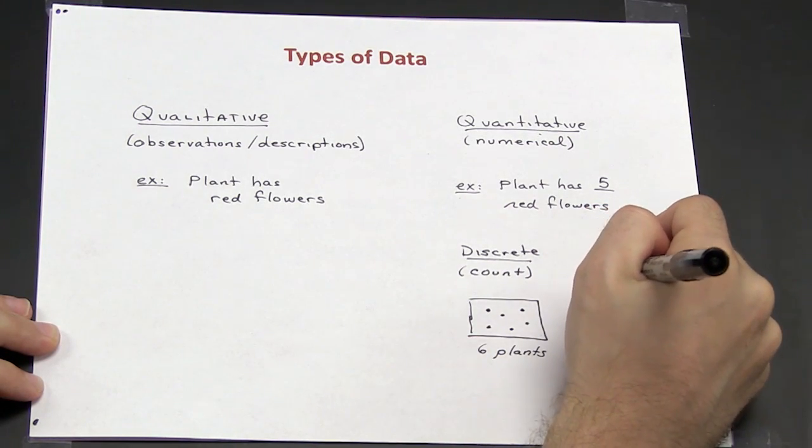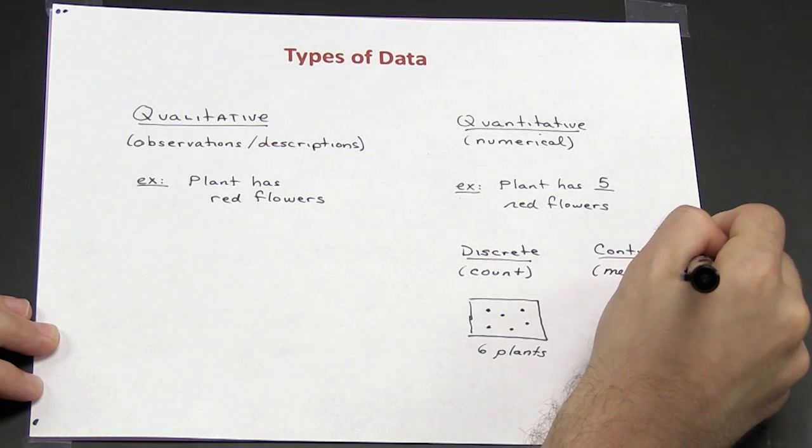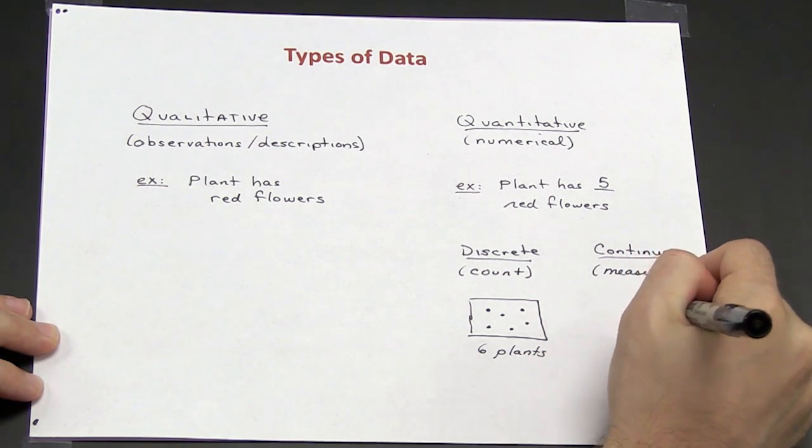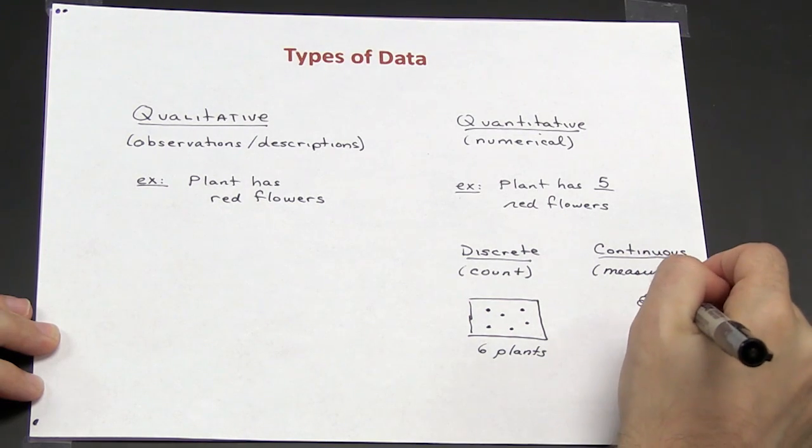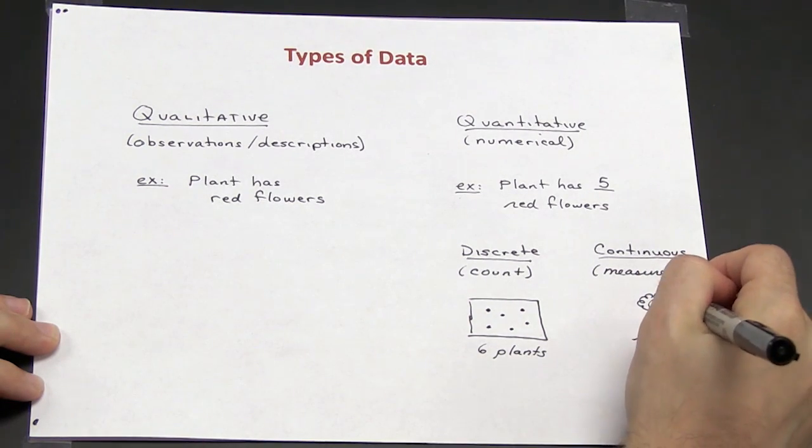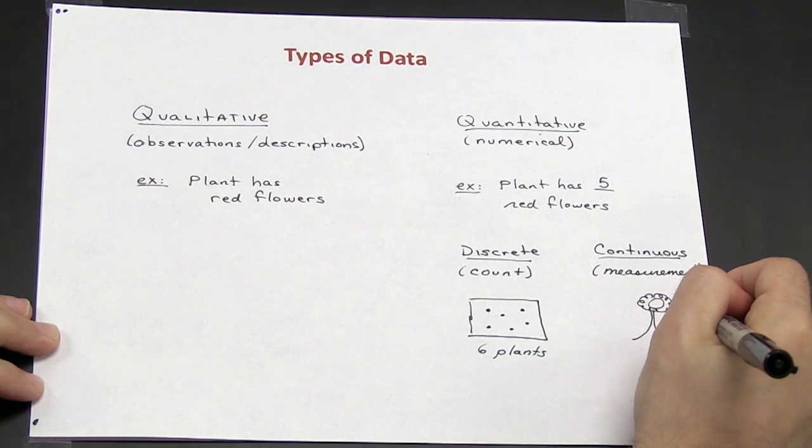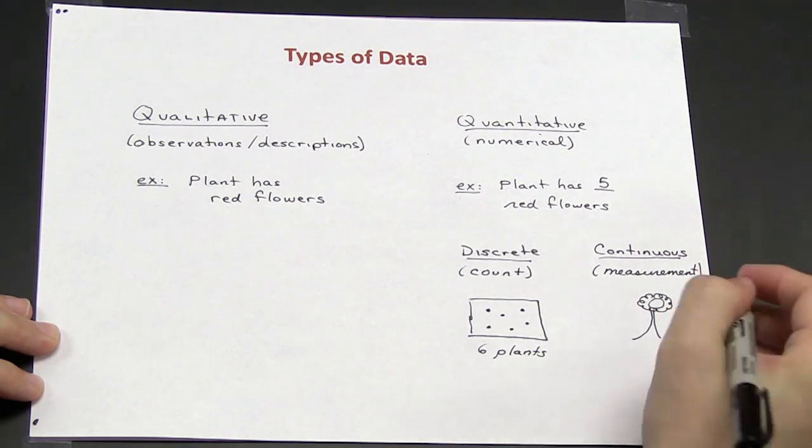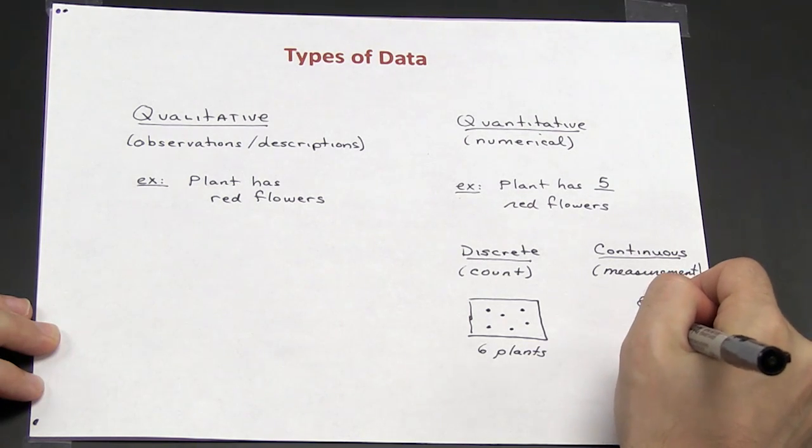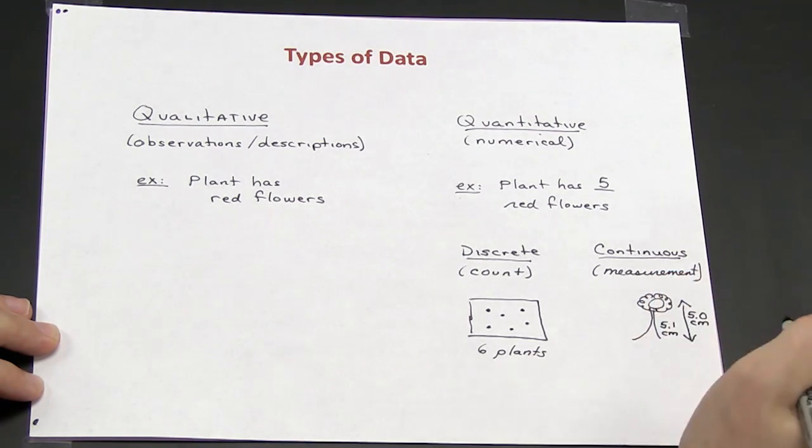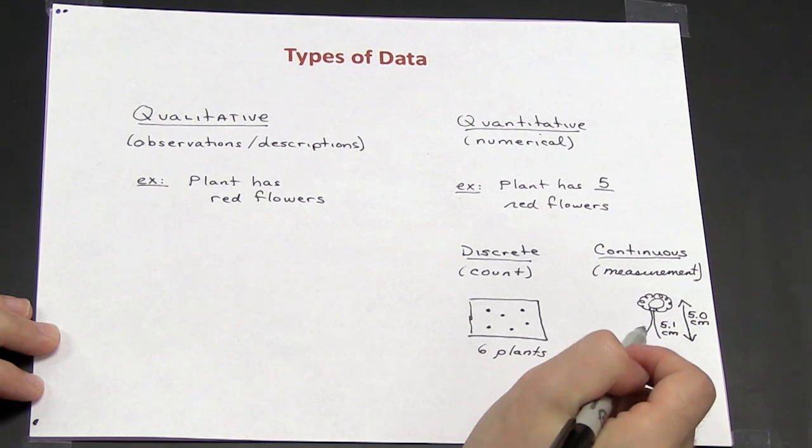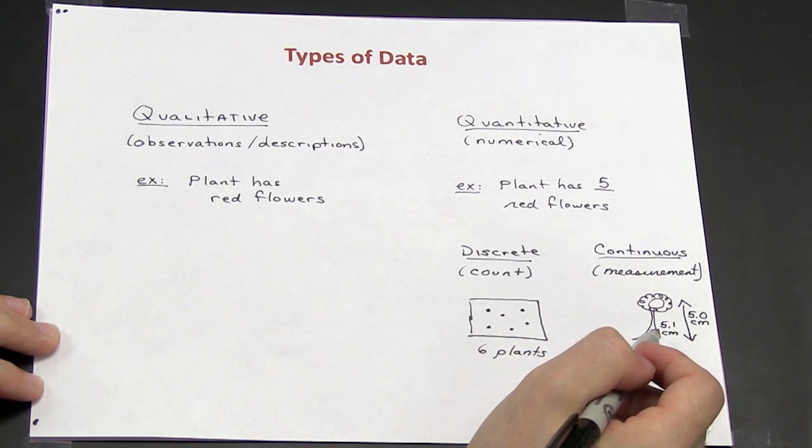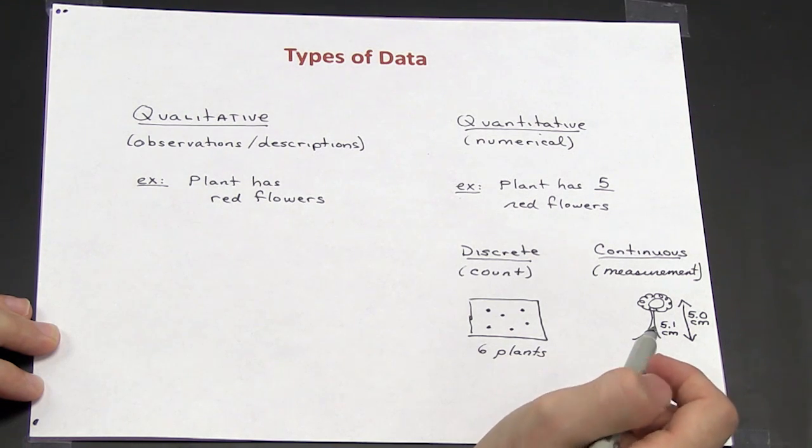Continuous is usually the result of some measurement that is made. So for example, if I have a flower and I measure the height of the flower, I might record the measurement as five centimeters. However, someone else measuring the plant might report it as 5.1 centimeters. So most likely the measurement of the plant is somewhere between 5 and 5.1 centimeters. That is an example of continuous data.